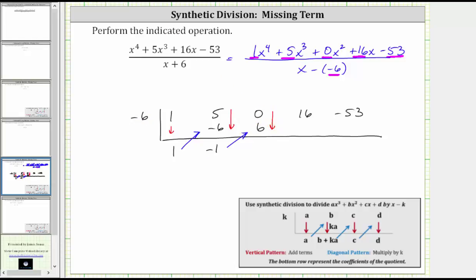We add vertically. Zero plus six is six. Multiply on the diagonal. Negative six times six is negative 36. And we add. 16 plus negative 36 is negative 20. Negative six times negative 20 is positive 120. Negative 53 plus 120 is equal to positive 67.